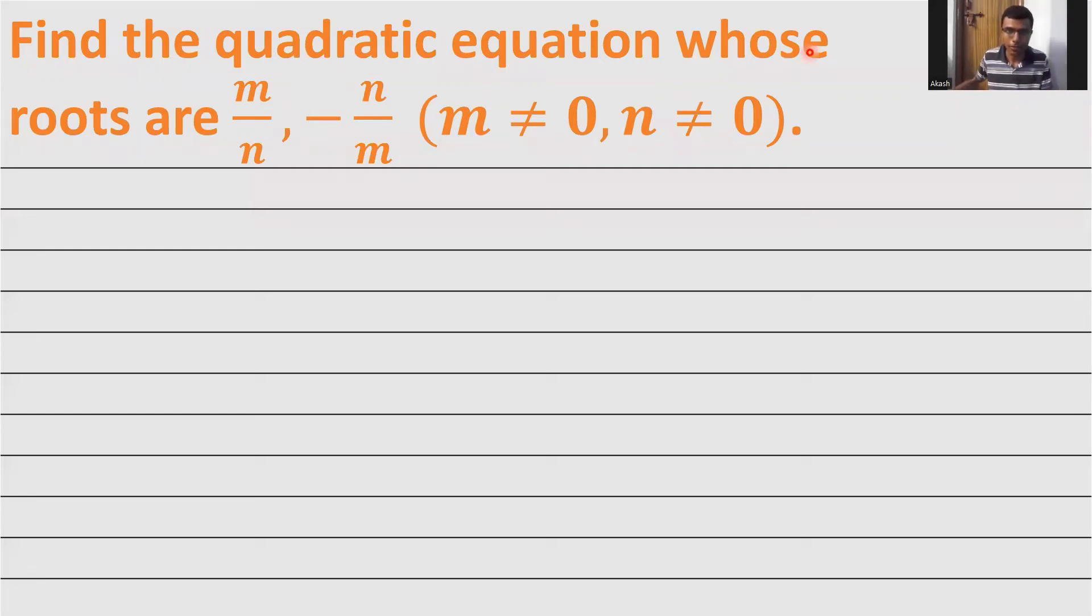Hello learners, now we are going to find a quadratic equation whose roots are m/n and -n/m. The standard procedure: let alpha equal m/n and beta equal -n/m.